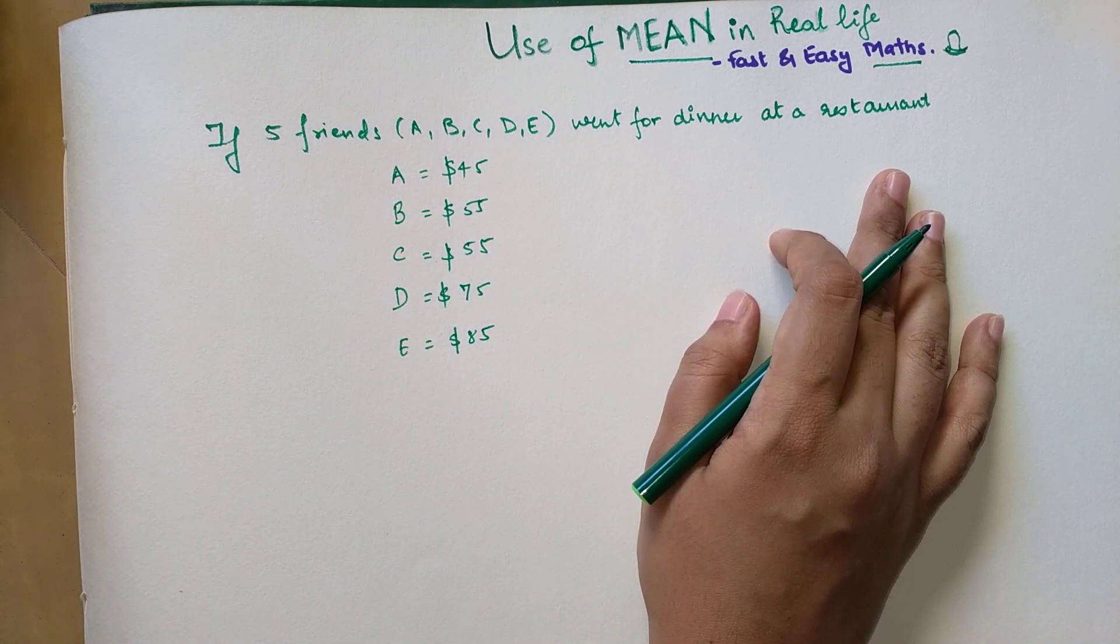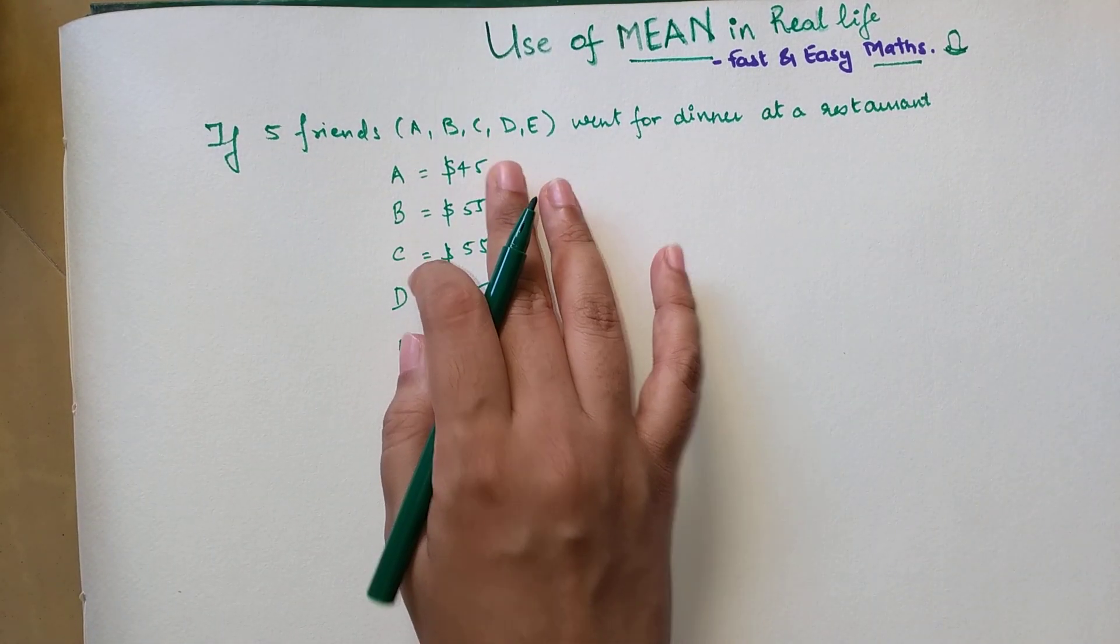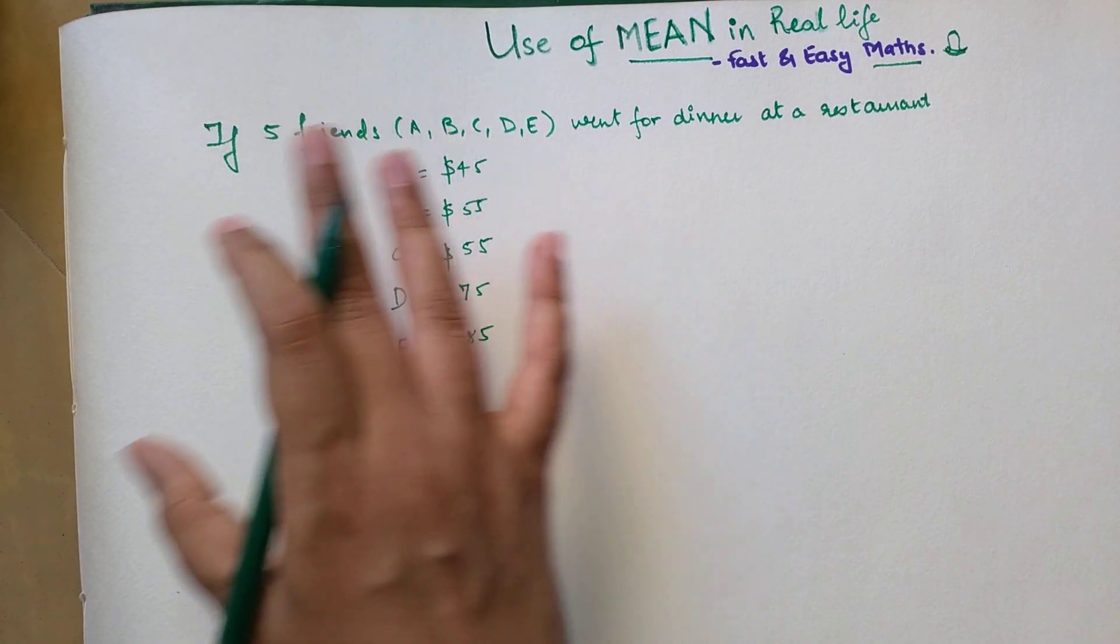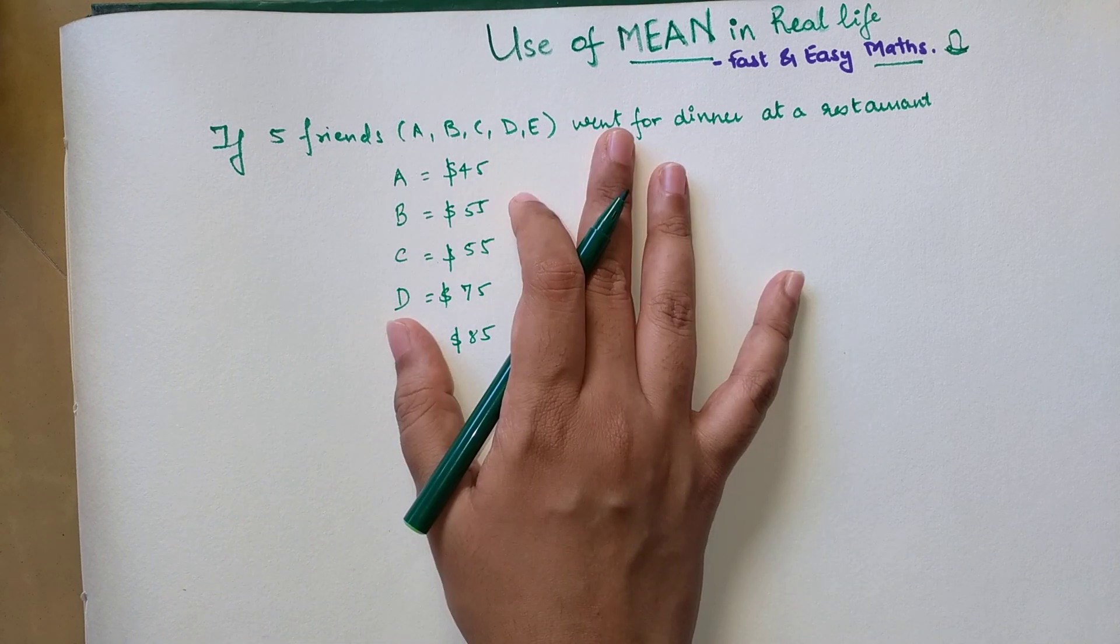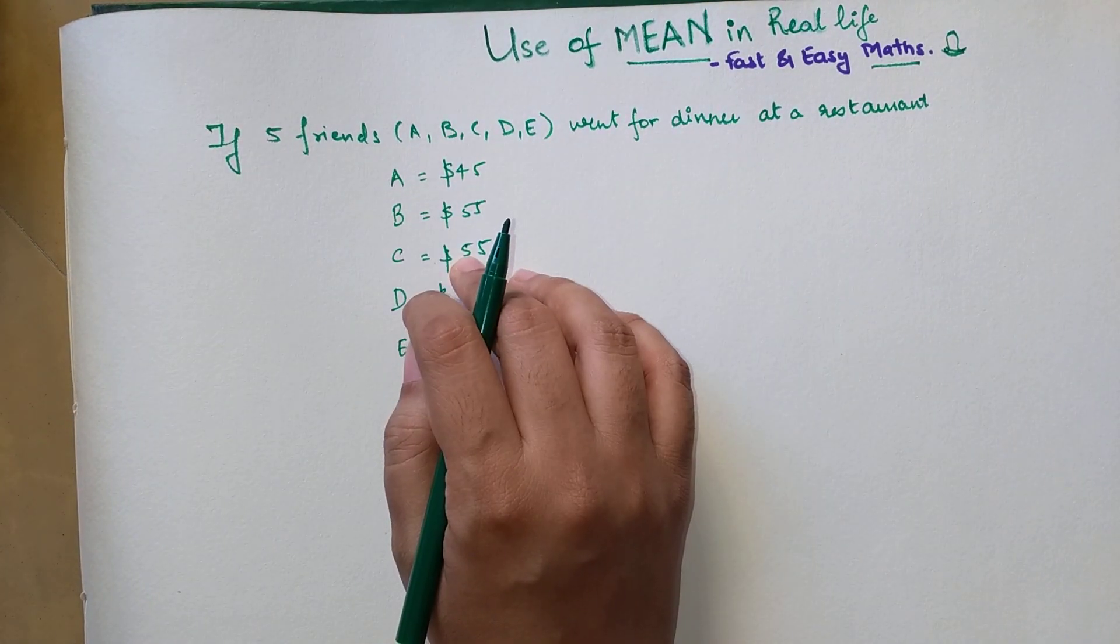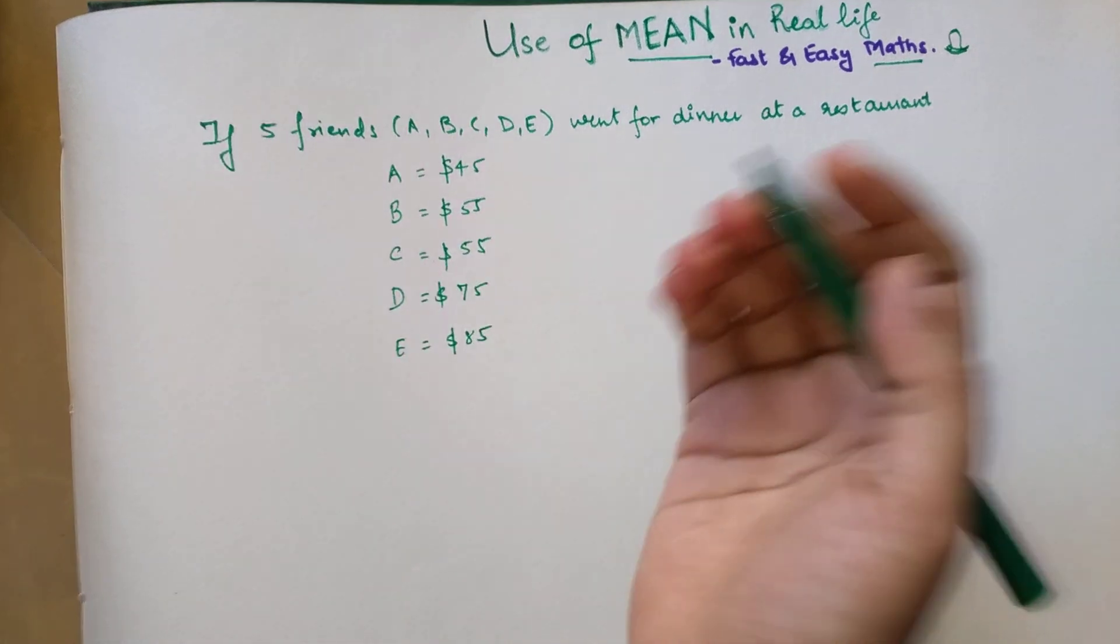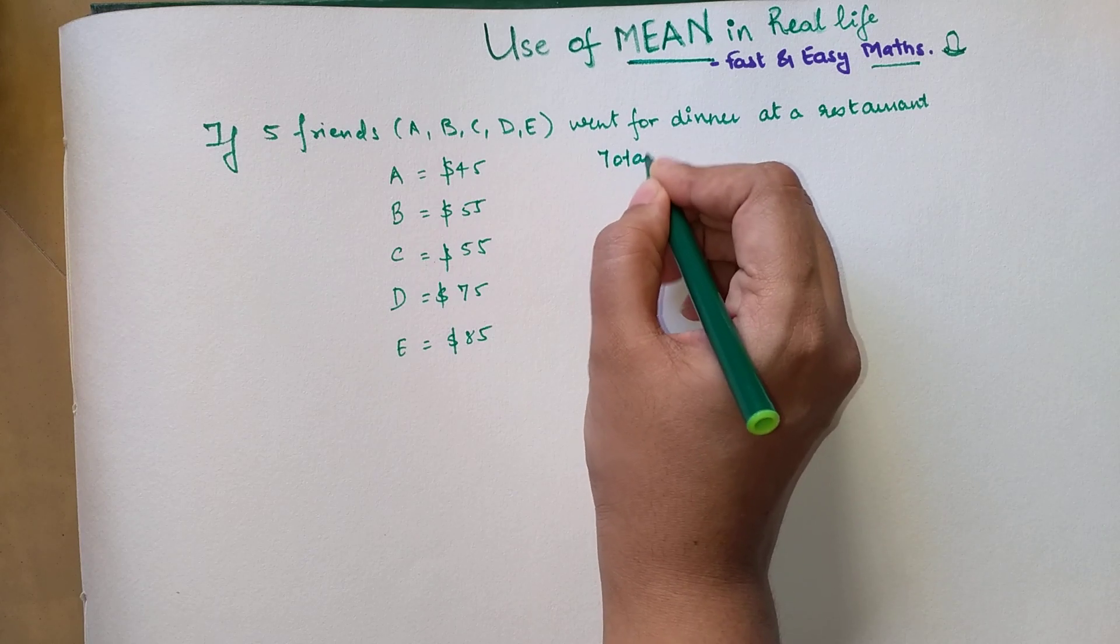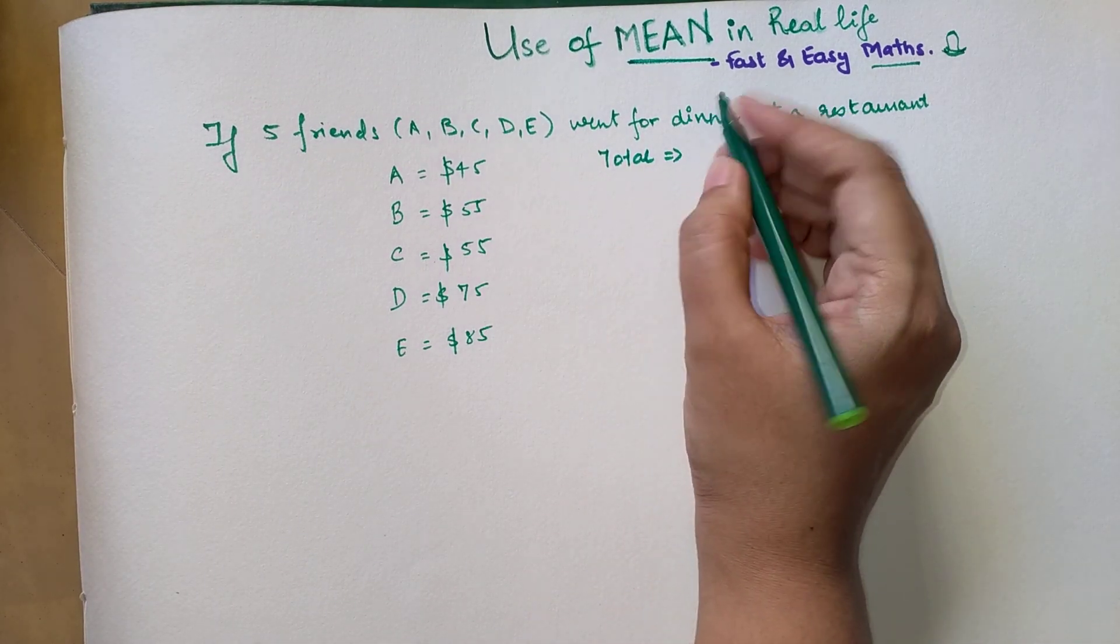Now they thought of doing the Dutch system - they will divide the whole bill by five and pay whatever amount they're going to get. That means they are going to do mean.